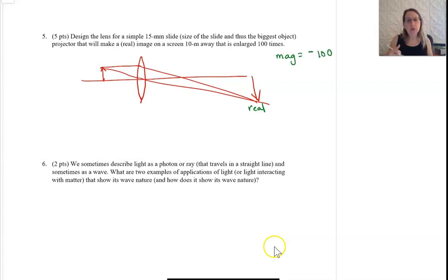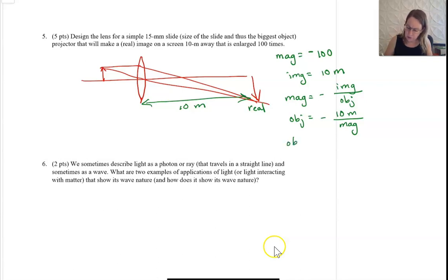The information that we have is that the magnification is equal to 100. It's actually going to have to be minus 100 to be a real image. And this is a distance 10 meters away. So we have the image distance is equal to 10 meters. And so we have magnification equals minus image distance over object distance, or our object distance equals minus our image 10 meters over our magnification, and our magnification is minus 100. So our object distance is 0.1 meters, plus, because we put in a minus magnification.